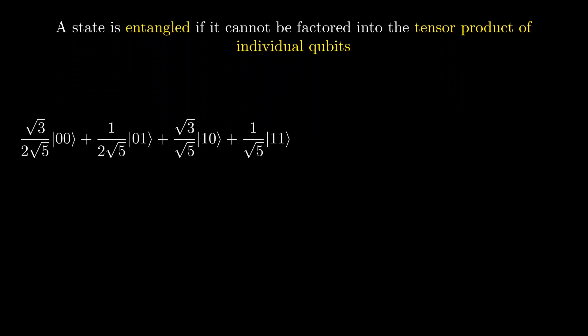There are many different entangled states. We say a state is entangled if it cannot be factored into the tensor product of single qubit states. For example, this state is not entangled since we can factor it like this, but this state is entangled since we cannot factor it into singular qubit states.